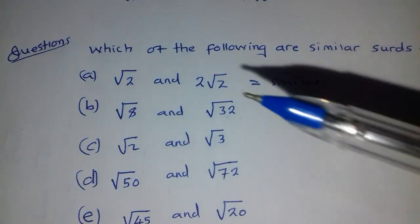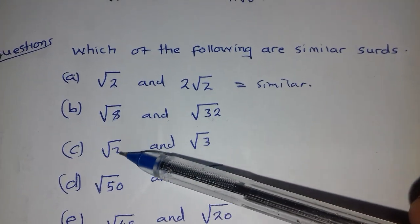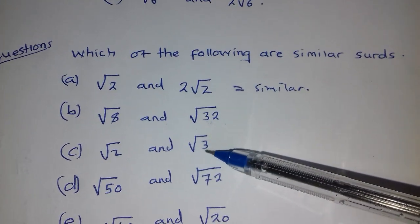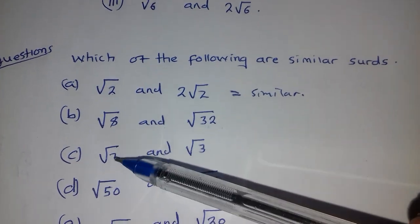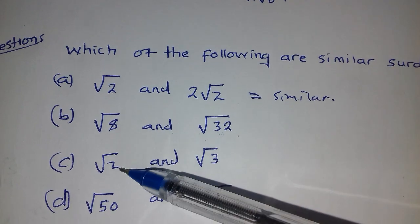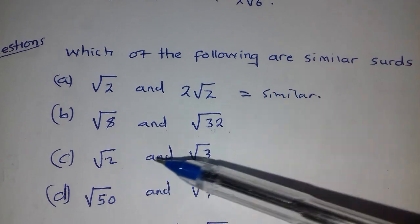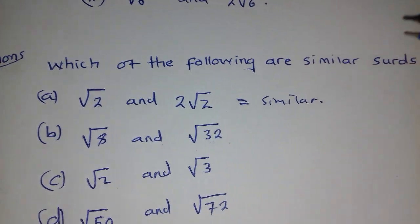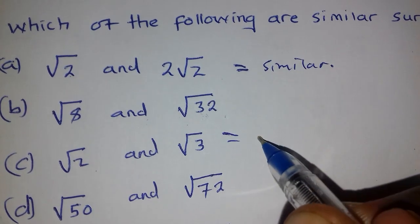Let's look at C. We have the square root of 2 and the square root of 3. We cannot reduce these ones any further. So we can conclude from here and say since the radicands are not the same, they are not similar surds.